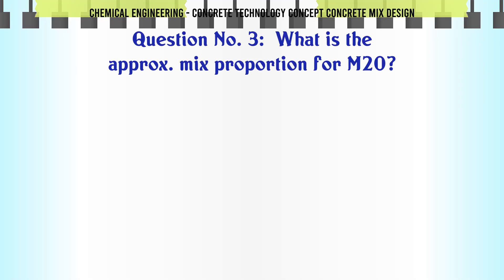What is the approximate mix proportion for M20? A: 1:3:6, B: 1:2:4, C: 1:1.5:3, D: 1:1:2. The correct answer is 1:1.5:3.